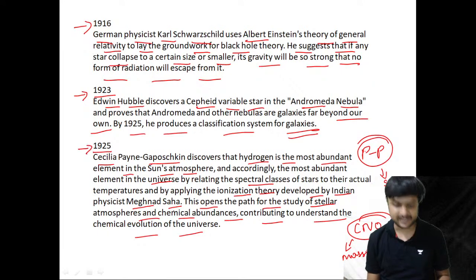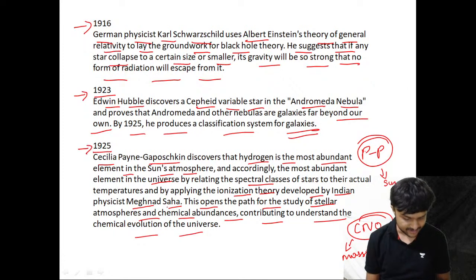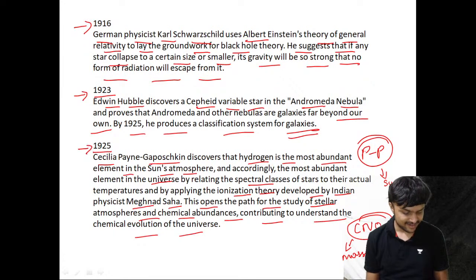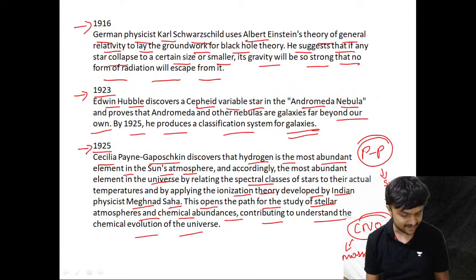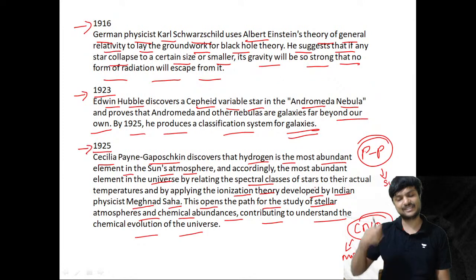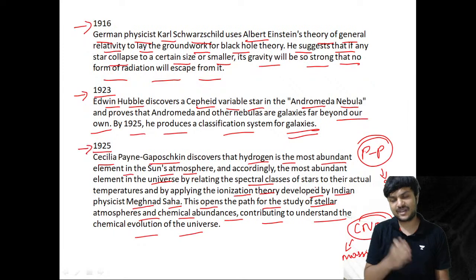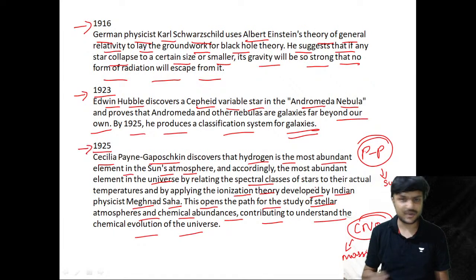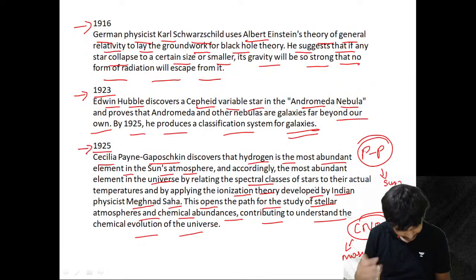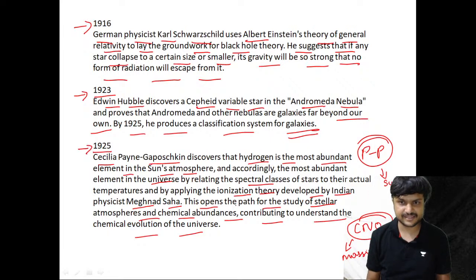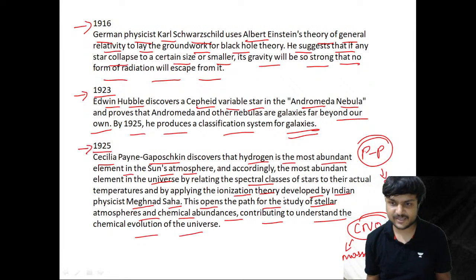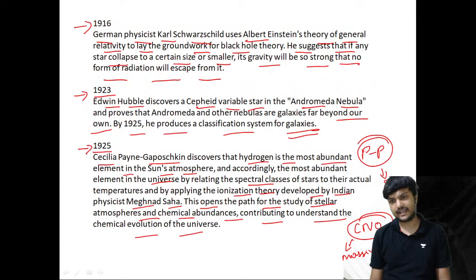Hubble transformed astronomy. The proton-proton cycle is a thermonuclear fusion reaction where hydrogen is converted into helium following thermonuclear steps. This happens in the Sun and Sun-like lower-mass stars. For more massive stars, the carbon-nitrogen-oxygen cycle is used instead.